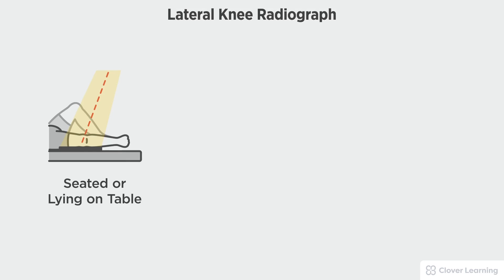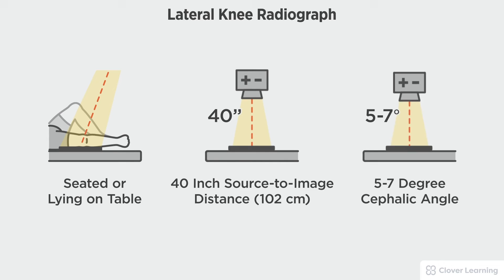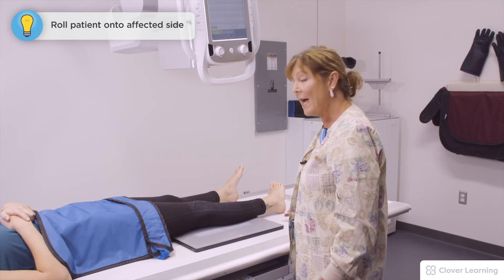In this view we will be demonstrating the lateral knee. The lateral knee should be performed with the patient seated or lying on the radiographic table, with the image receptor placed tabletop or in the bucky, a 40 inch source to image distance, and a cephalic tube angle of five to seven degrees.